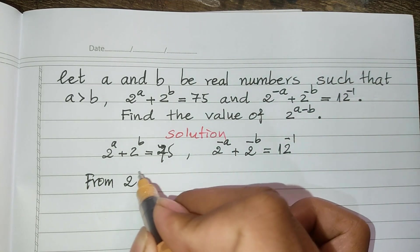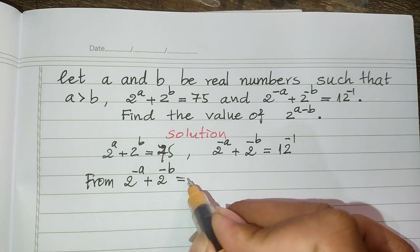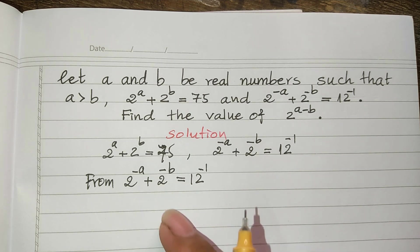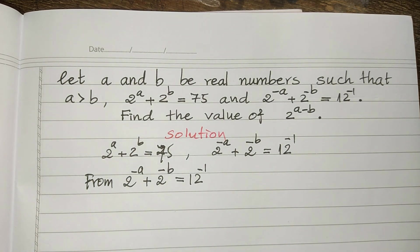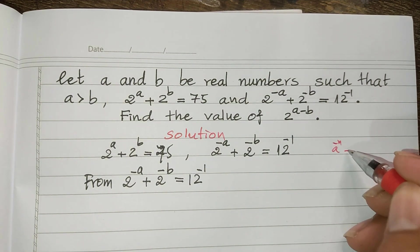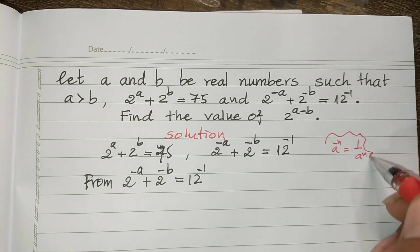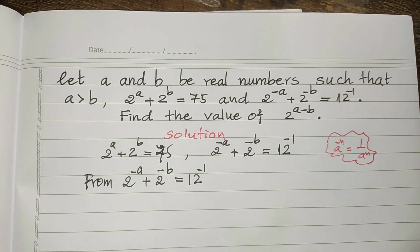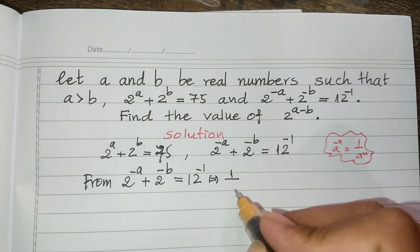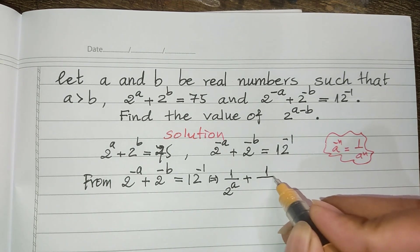From the second equation, 2 to the power negative a plus 2 to the power negative b equals 1/12. I use the formula that a to the power negative n equals 1 divided by a to the power n. Applying this formula, we get 1 divided by 2 to the power a plus 1 divided by 2 to the power b equals 1/12.